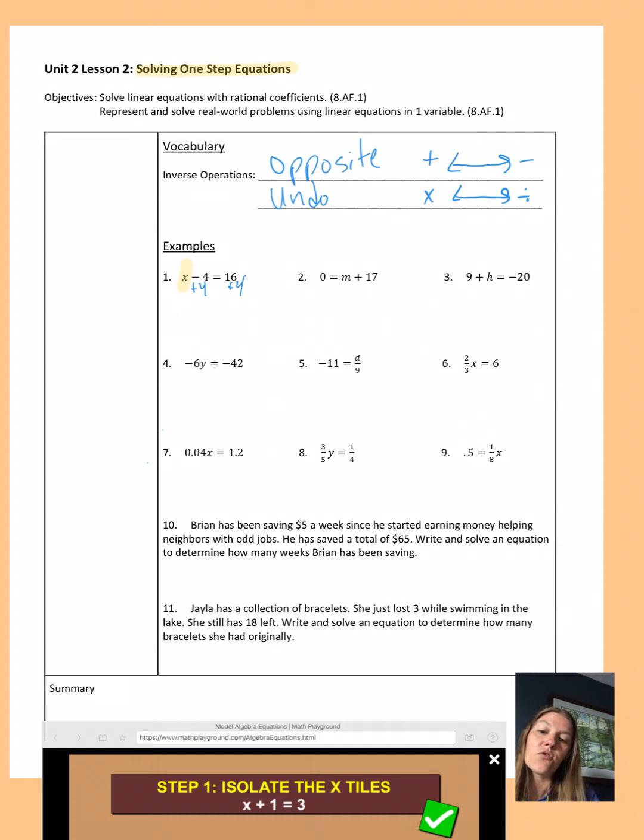And then a minus 4 and a plus 4 make 0. So on this left side, we have x plus 0. But x plus 0 is really just x. And then 16 plus 4 is 20. And then we can check our work as well. If I plug in 20 for x, 20 minus 4, is that really equal to 16? And yes, it is, so we know our answer is correct.